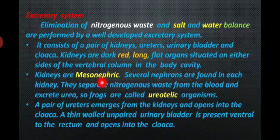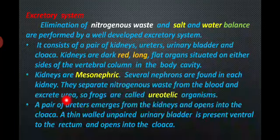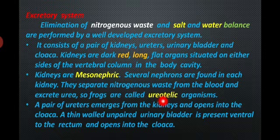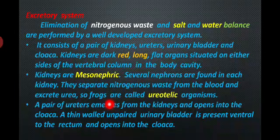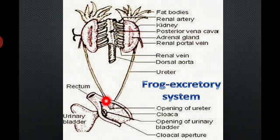Several nephrons are found in each kidney, collecting nitrogenous wastes from the blood and excreting them as urea — frogs are termed ureotelic organisms. A pair of ureters emerges from the kidney, opening into the cloaca. A thin-walled, paired urinary bladder is present ventral to the rectum region, opening into the cloaca.